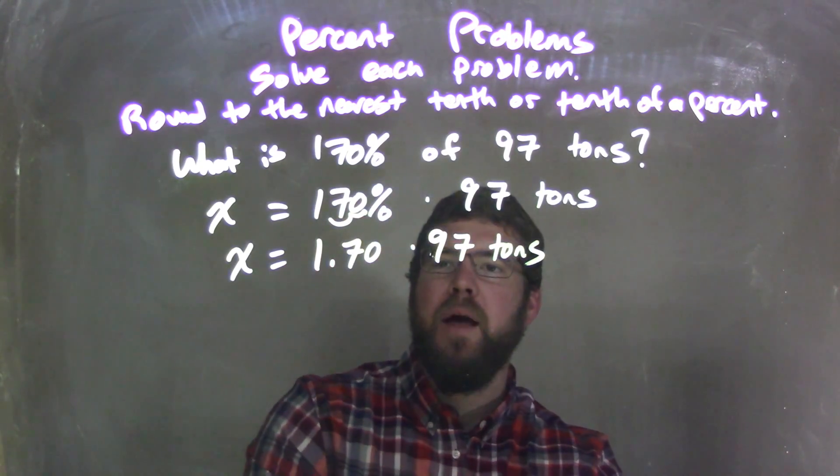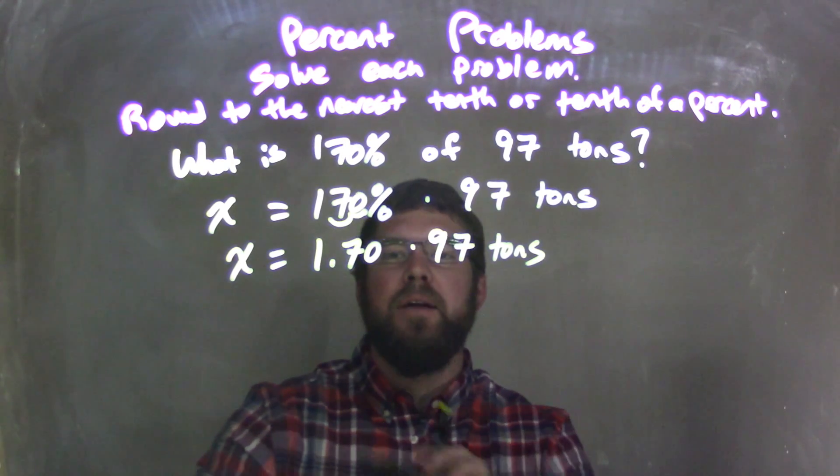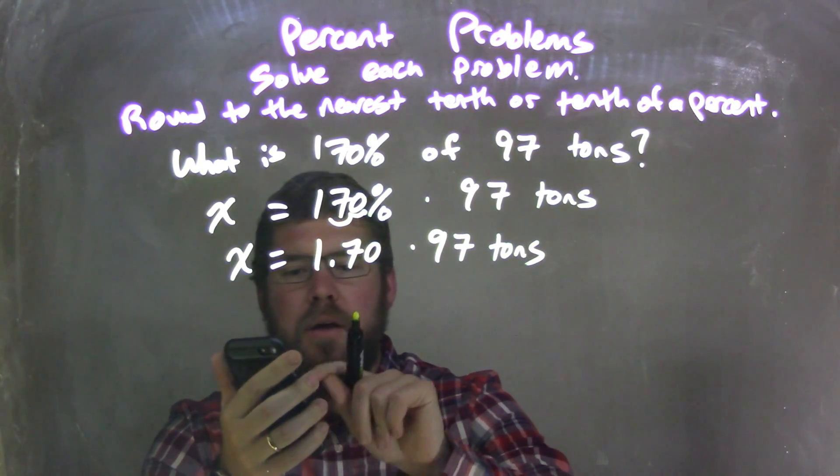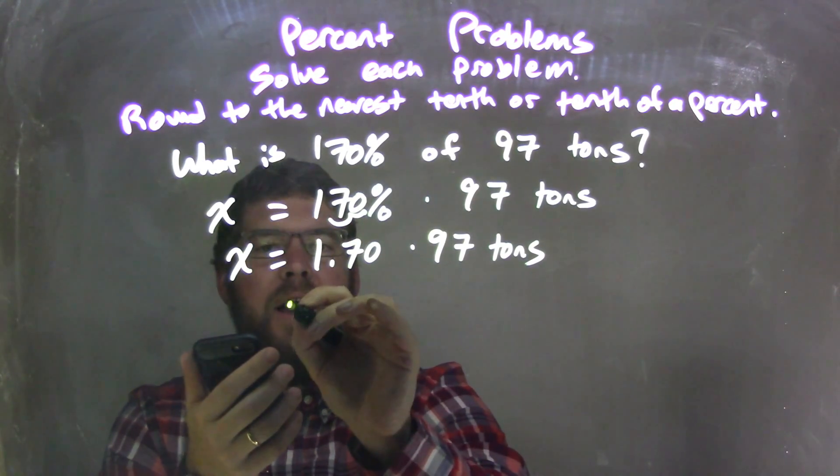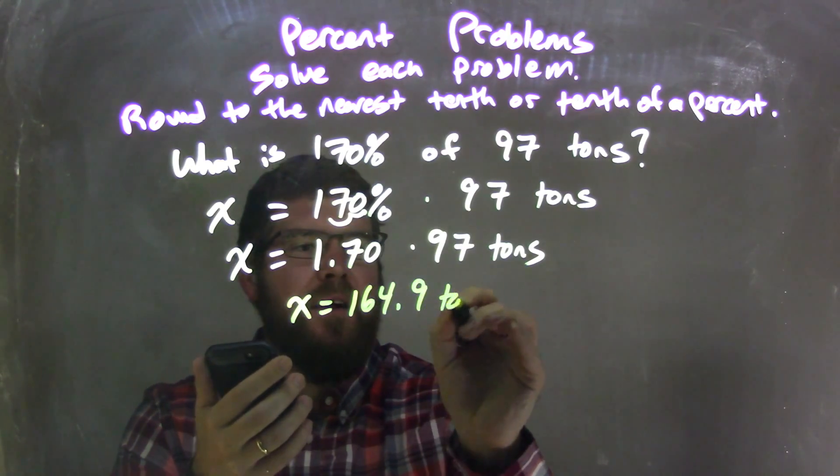Okay, from there, 97, we have to multiply that out, so let's use our calculator here. So 1.70 times 97 tons is X equals 164.9 tons.